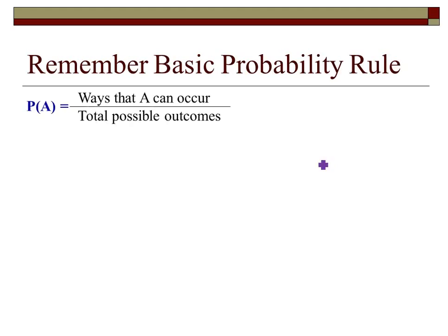The best rule to remember for basic probability: if I want to find the probability of an event A, I look at the number of ways that A can occur divided by the total possible outcomes. All I've got to do is count up how many times this can happen, or look at all the probabilities and add them all up, divided by the total possibilities.